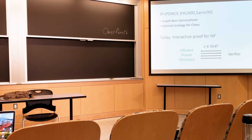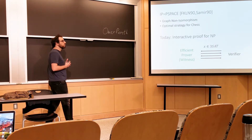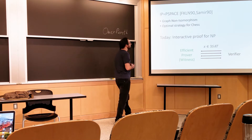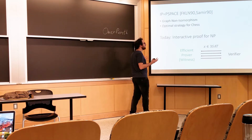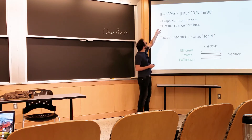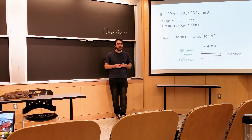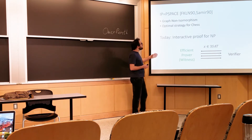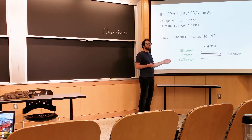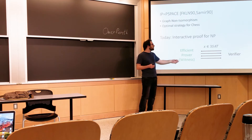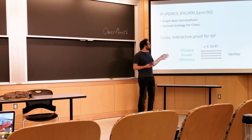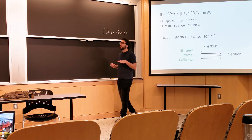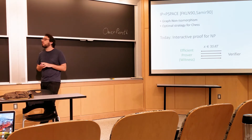Today we're going to put aside this extra power of interactive proofs and focus on interactive proofs for NP statements. For languages in NP, like satisfiability, we want to prove a formula is satisfiable. In these examples the prover has to be efficient given a witness. So the prover can't decide if a formula is satisfiable on its own, but given a satisfying assignment as witness, it should be able to convince the verifier. Both the prover and verifier are efficient; the only difference is the prover knows a witness.